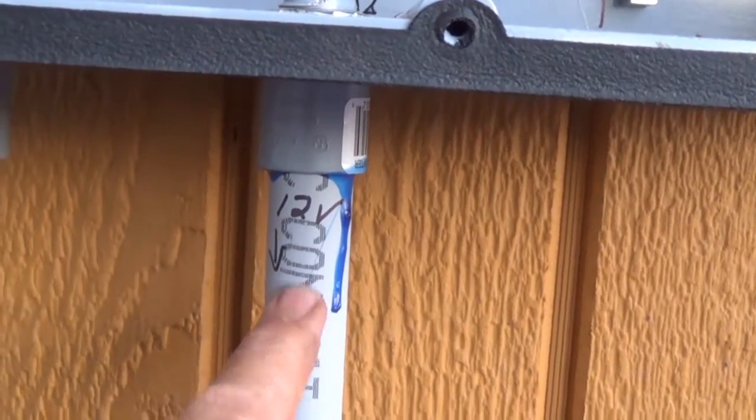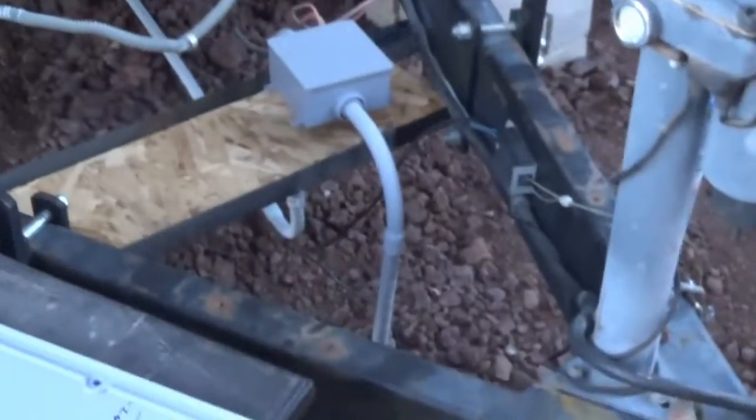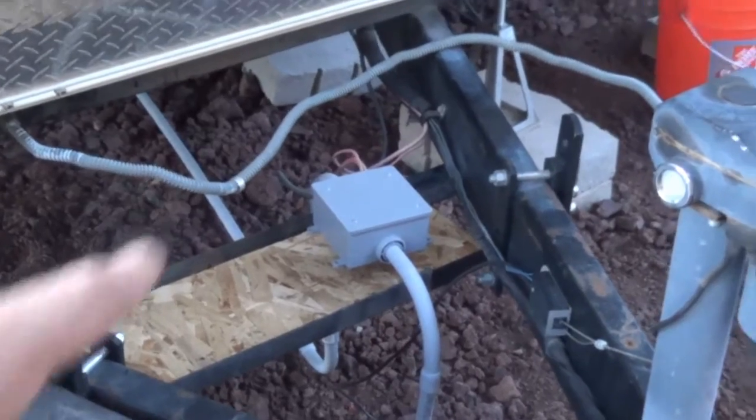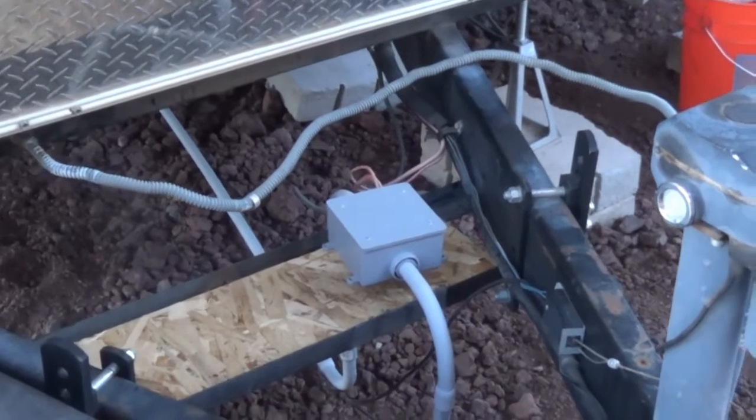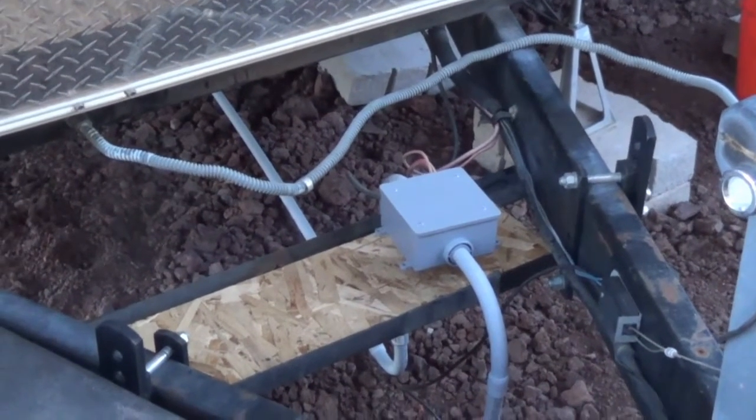Then this 12 volt line here goes to my RV, basically comes down around and connects right there to my RV. Then I did an auxiliary line and run it to the back of the RV just to put a 12 volt lighting in the back for entertainment if I wish.